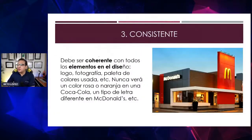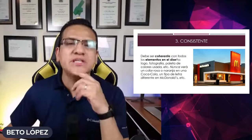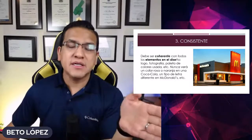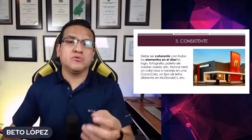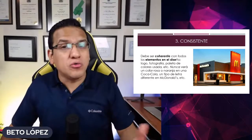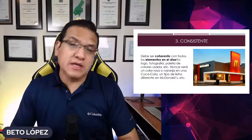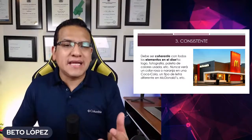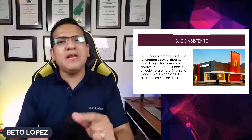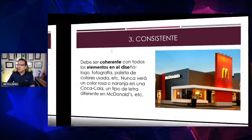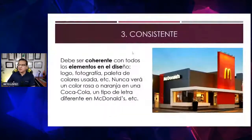Número tres: tu logotipo tiene que ser consistente. Significa que tenga coherencia con la marca. Si estás haciendo una marca para un juguete de niñas, no le metas color negro y rojo, que son colores de fuerza y pasión. Métele rosa y formas redonditas. Si estás haciendo un grupo de rock, no le vas a colocar color rosado. Que el logotipo sea consistente quiere decir que tenga lógica y coherencia con los colores, la forma y todo lo que vayas a hacer.